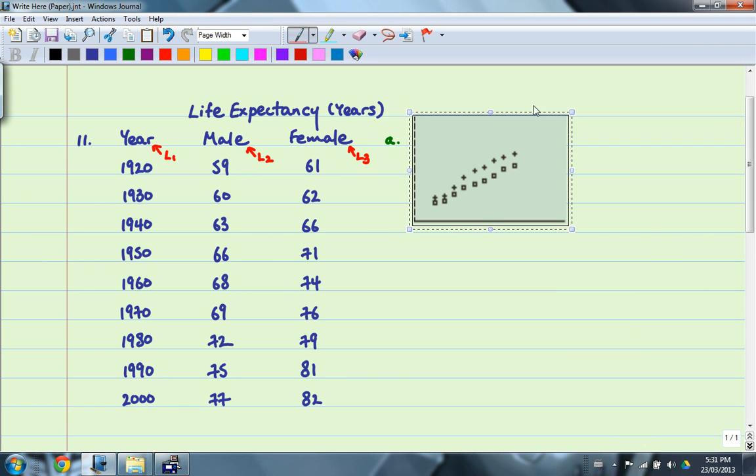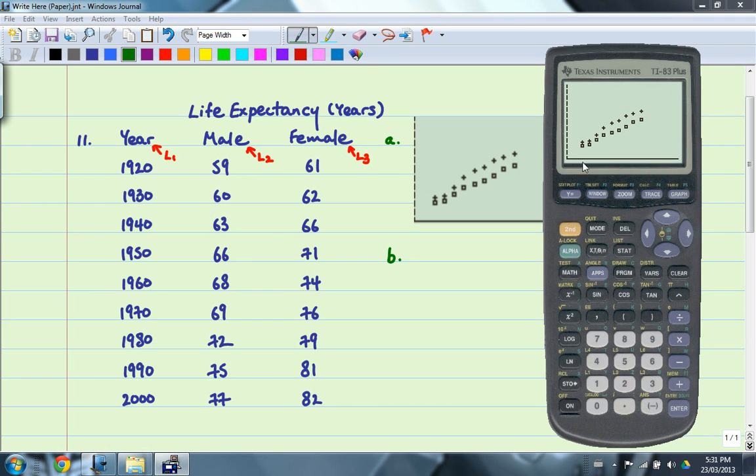It would be better if you have evidence of creating a scatterplot, but I'm not going to ask you to sketch something like that because it seems to be quite a lot of work. So here's part B. Determine the equation of a linear regression function for each set of data. So I'm going to go ahead and go second, quit. And that will take us to the regular calculator screen with nothing on it, which is nice. And what I'm going to do is to determine the equation of linear regression.